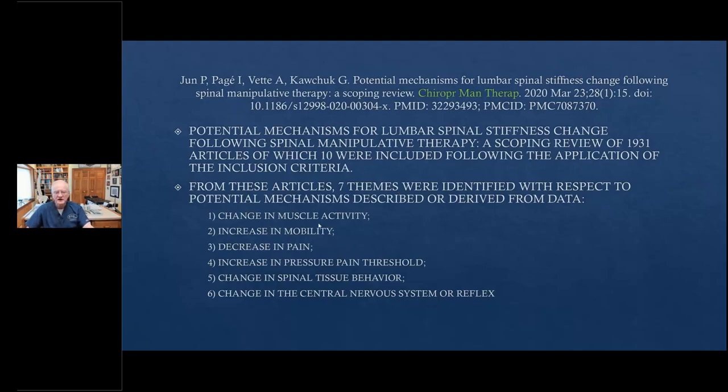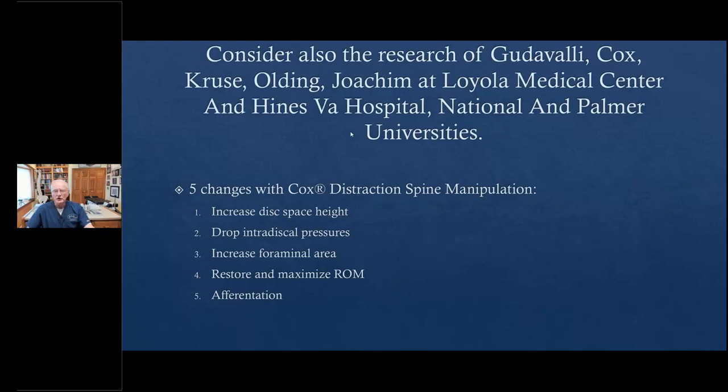And then Jun wrote in this paper, Chiropractic Manual Therapy, a year ago, that from the articles, there are seven themes identified that happen when you apply spinal manipulation with a positive clinical outcome. The themes are, there's a change in muscle activity, we increase range of motion, we decrease pain, we increase in the pressure pain threshold, we change the tissue behavior, and we change the central nervous system in what we call afferentation. That is, the substantia gelatinosa interpretation by the lateral spinothalamic tract and the posterior tracts of Goll and Burdach to the somatosensory cortex of the brain and into the limbic system, forming the corticospinal tracts and endorphin production in response.